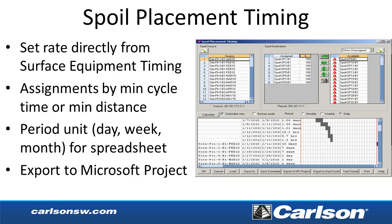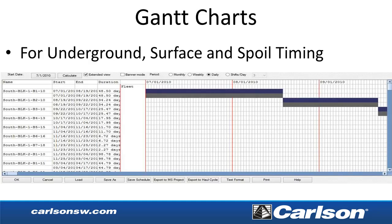For spoil placement timing, there's a new method to skip fleet assignments and come directly from surface equipment timing. You can also do assignments based on minimum cycle time or minimum distance. In the dialog you can choose the period as day, week, or month, and there's a new option to export to Microsoft Project. Gantt charts have been added for all timing routines — underground, surface, and spoil timing.